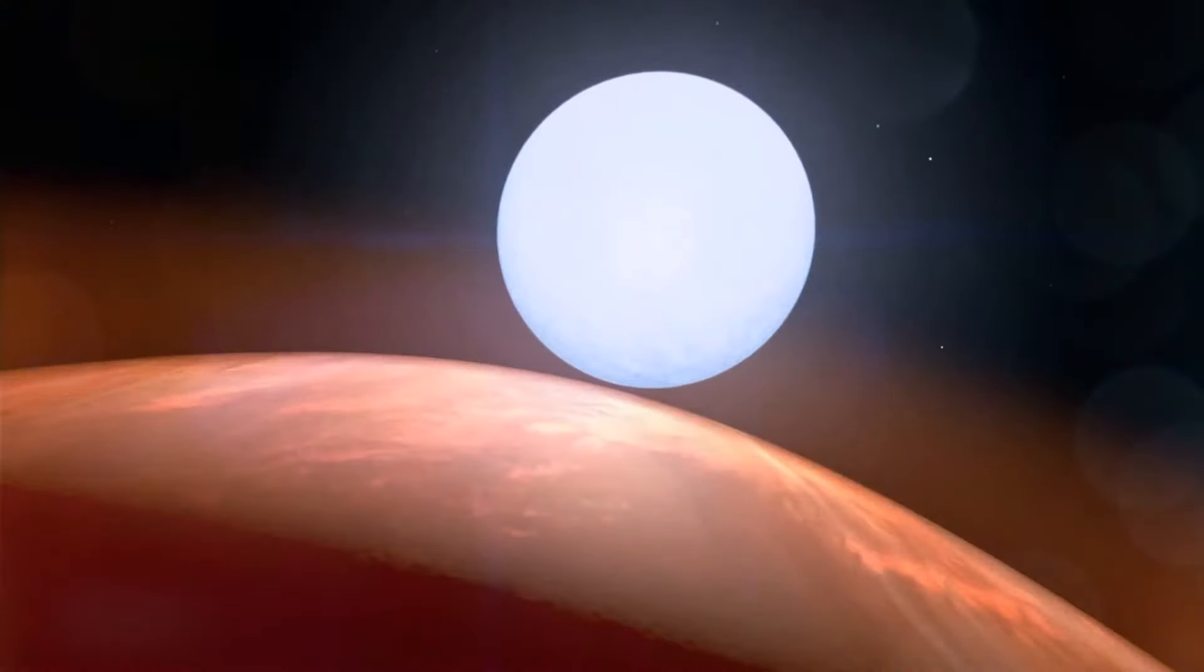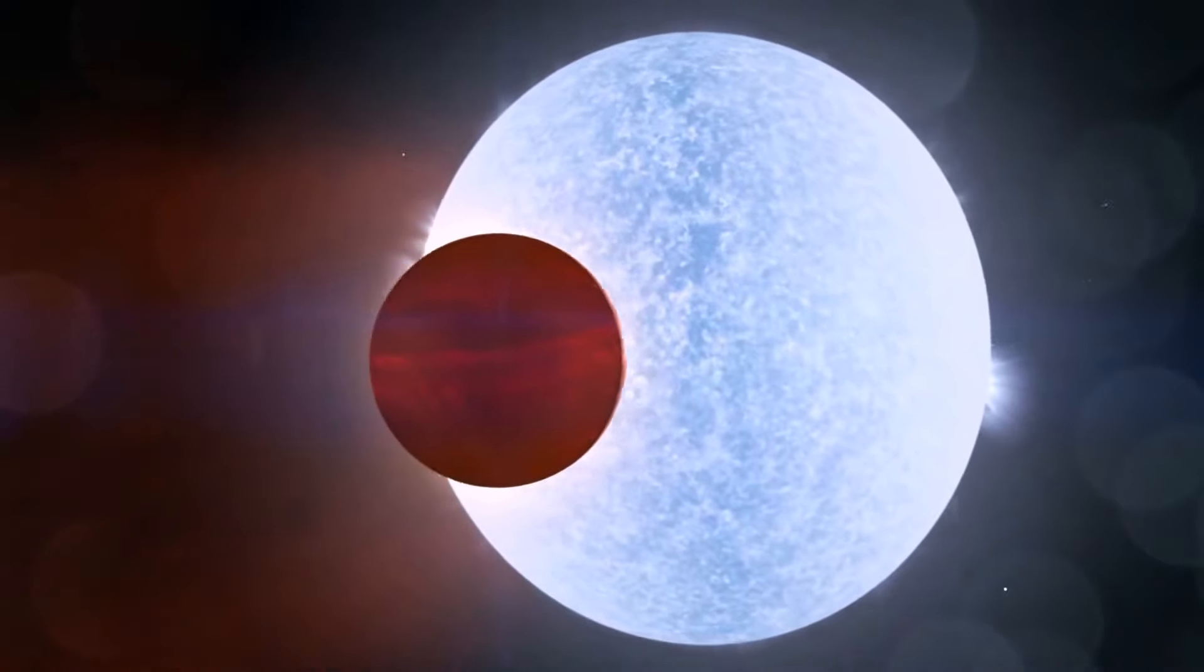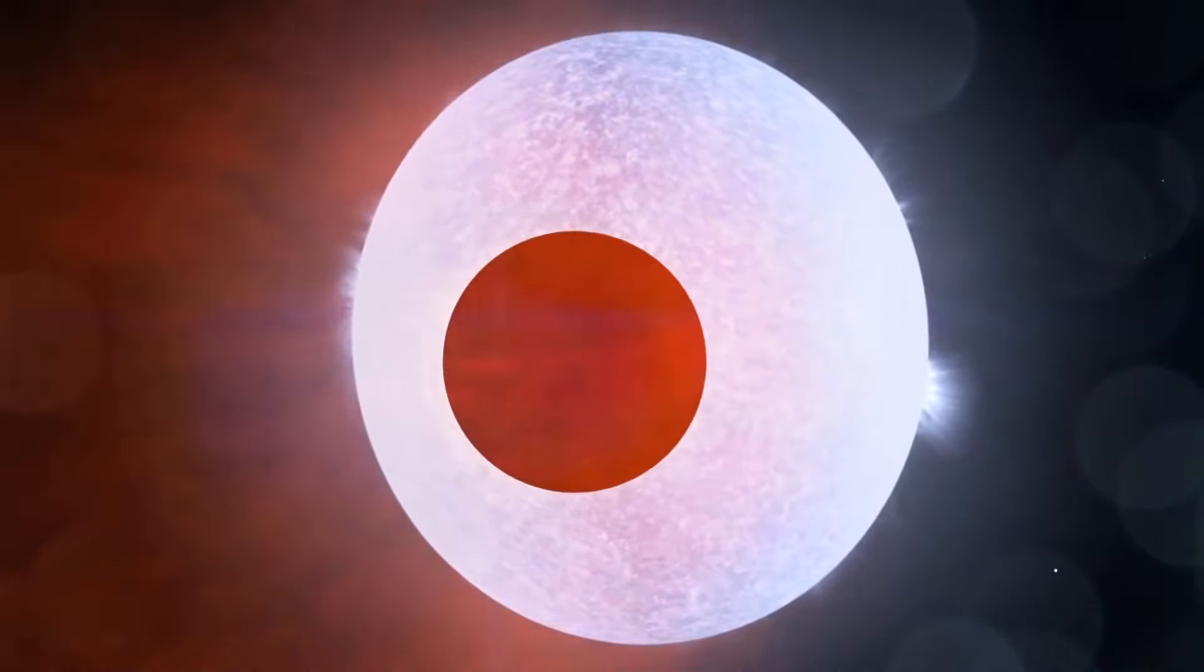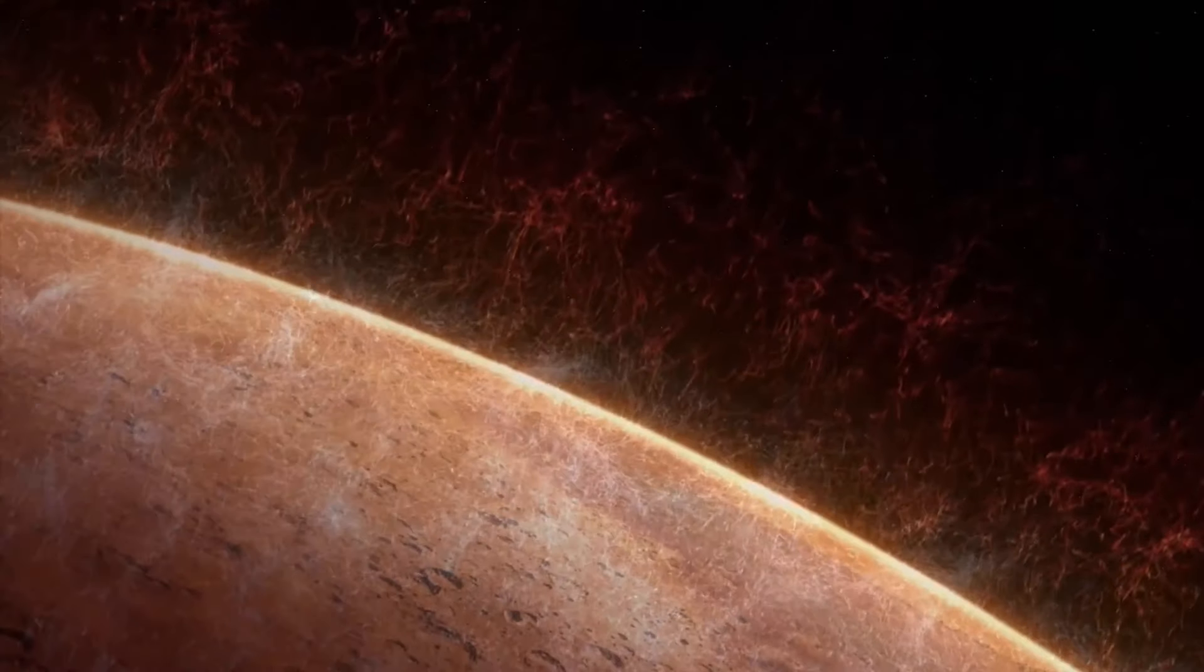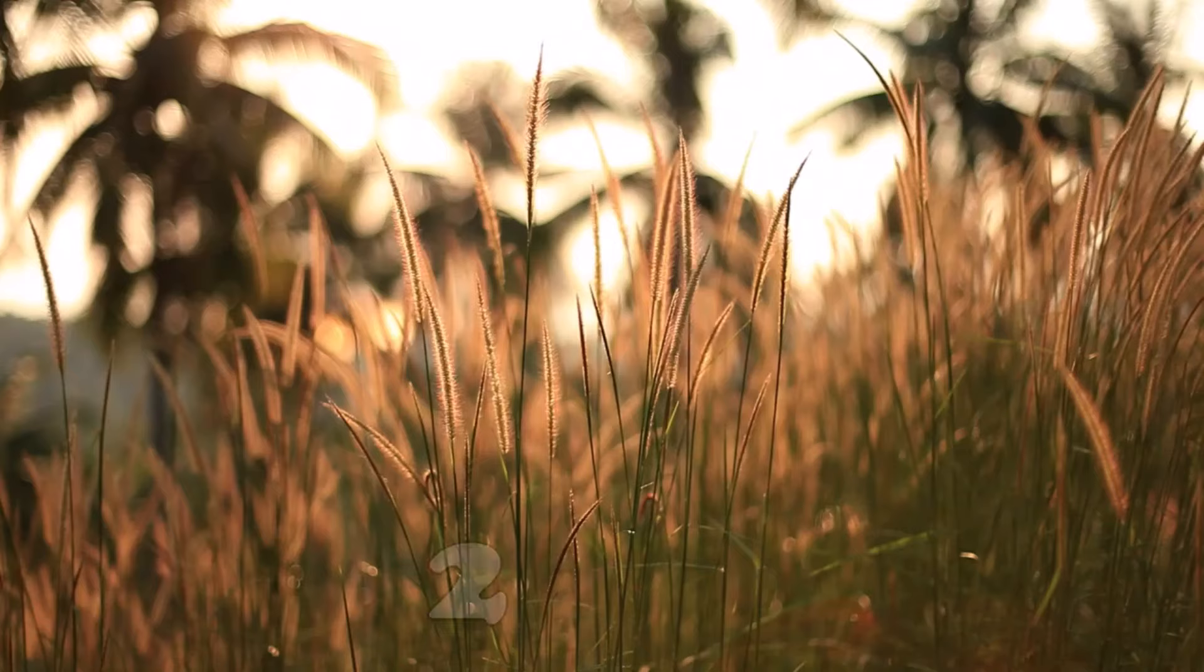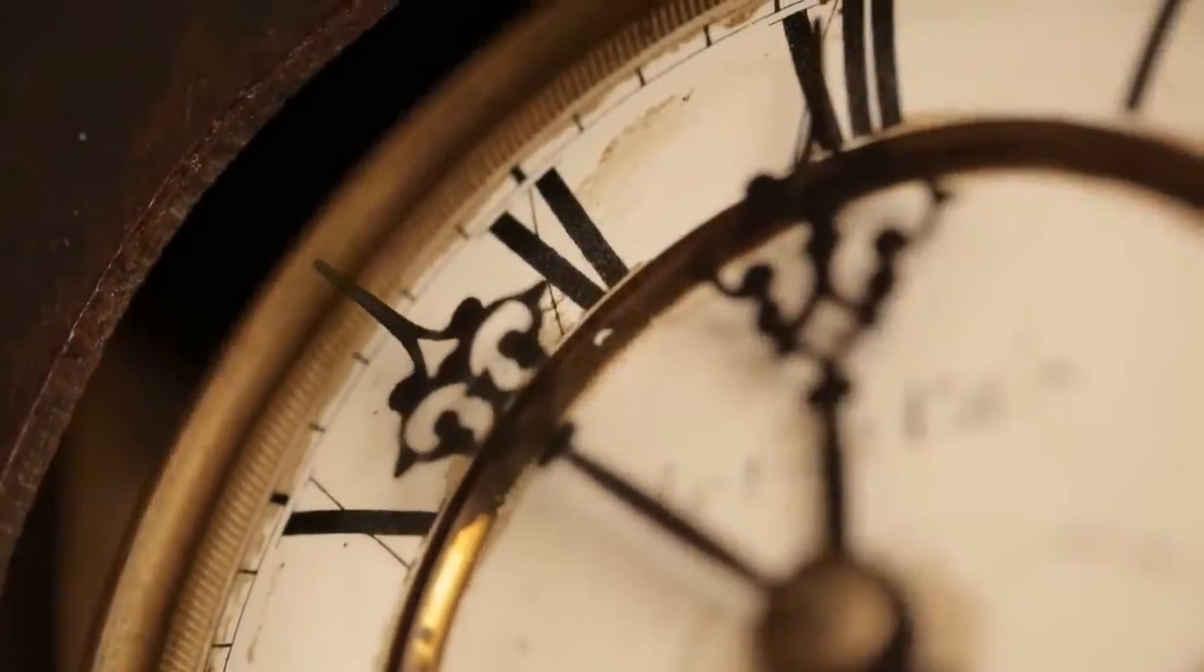This gas giant is 2.9 times heavier than Jupiter and orbits its star once every 36 hours. But there's a twist to it. Within these 36 hours, the KELT-9b experiences two summers and two winters with each season lasting about 9 hours.